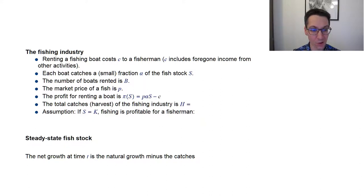And now the question we can ask is, what are the total catches in a day? Well, it's a function of the total boats in the ocean. So we're going to label this H, capital H for harvest. And it's going to be α times B times s. So αs is the total catches of one fishing boat in the day. And B is the total number of boats.